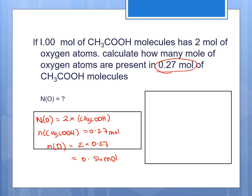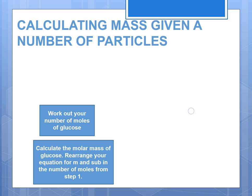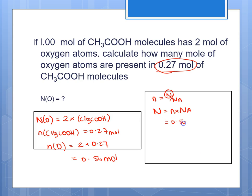Now with 0.54 moles of oxygen atoms, we substitute into N = n × Nₐ: 0.54 × 6.02 × 10²³ = 3.25 × 10²³ oxygen atoms.